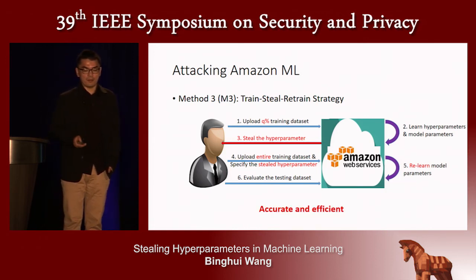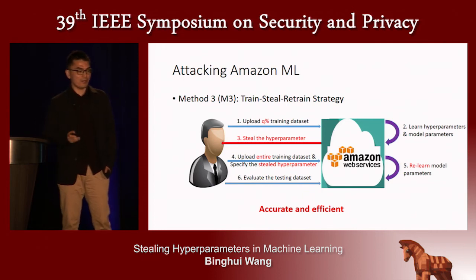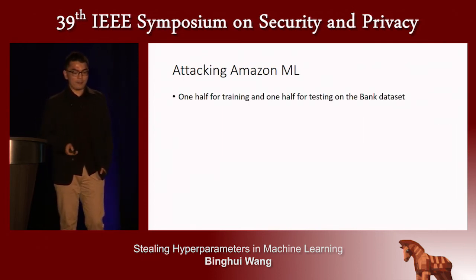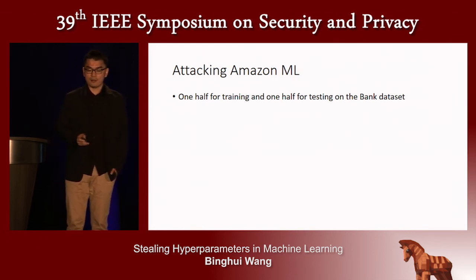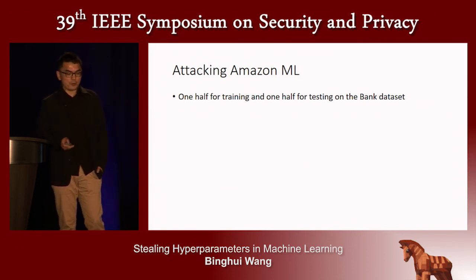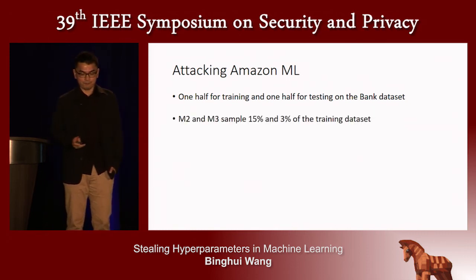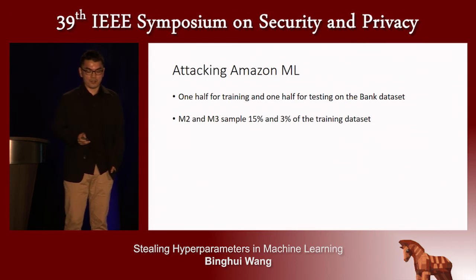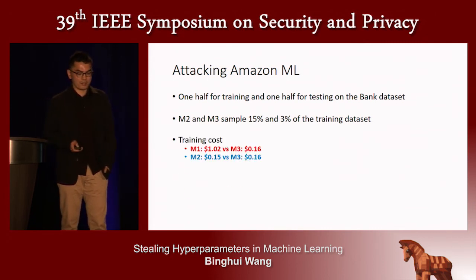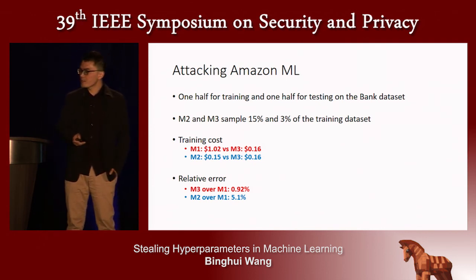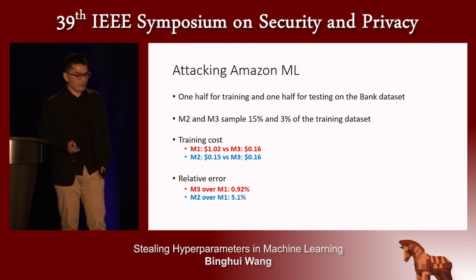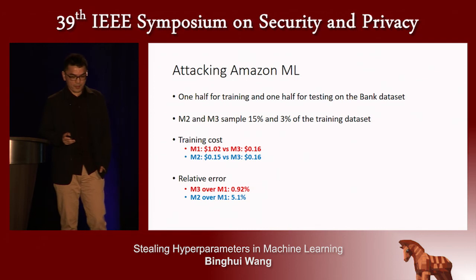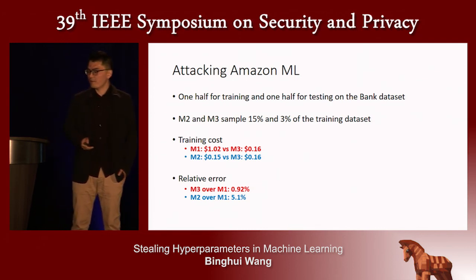Because hyperparameters are learned using a subset of the training dataset, Method 3 is efficient; and because model parameters are learned using the entire training dataset, it is accurate. We compare the three methods on a bank dataset using Amazon Machine Learning, using one half for training and the other half for testing, and sampling 15% and 3% of the training data for M2 and M3 respectively. Amazon charges users by computational time, so we calculate training cost and relative error. Compared with M1, M3 saves much training cost with a very small accuracy loss. Compared with M2, M3 has almost the same training cost but much smaller relative error.